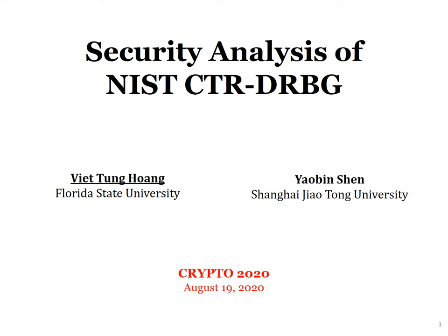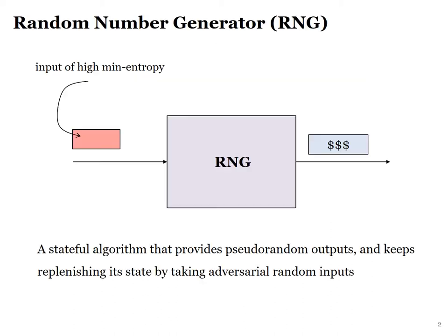This talk is about security analysis of Counter-DRBG, a NIST standard random number generator. I'm Viet Tung Hoang and this is joint work with Yaobin Shen. Counter-DRBG is a random number generator, or RNG for short. Syntactically, an RNG is a stateful algorithm that keeps refreshing its state via inputs of high min-entropy and provides pseudo-random outputs upon request.